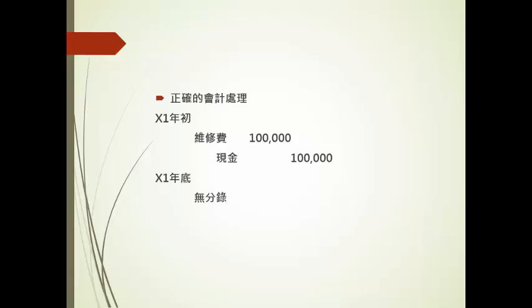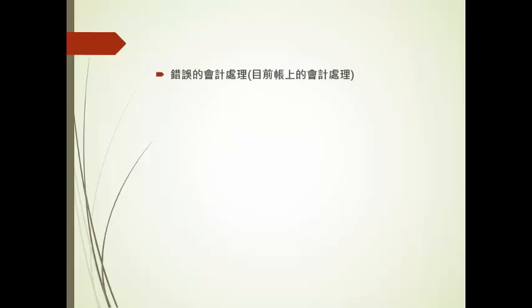我们先来看一下这一题正确的会计处理是什么。X1年初，题目说它是一笔维修费用，所以我们应该借维修费贷现金10万元。X1年底当然不会有任何分录，X2年底也不会有分录。那如果是错误的，也就是目前账上的会计处理，它在X1年初会出借机器贷现金10万元。